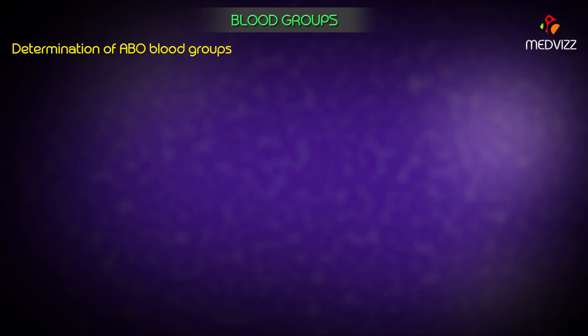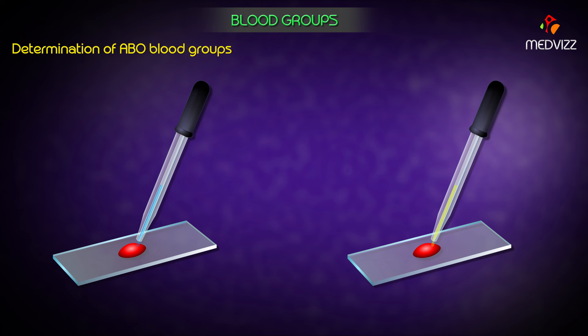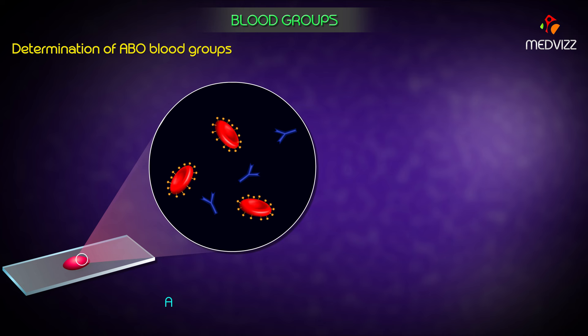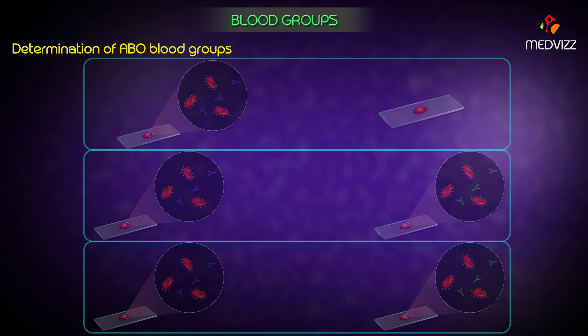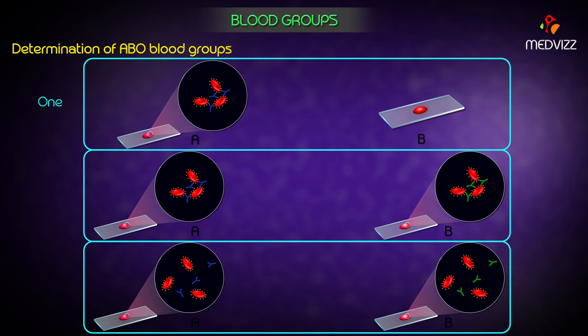ABO blood group determination is done by mixing one drop of red cell suspension in isotonic saline with a drop each of antiserum A (containing alpha agglutinins) and antiserum B (containing beta agglutinins) separately on a glass slide. Antiserum A causes agglutination of RBCs having A antigens, and antiserum B causes agglutination of RBCs having B antigens. The blood group is identified by the presence of agglutination with one, both, or neither of the sera.